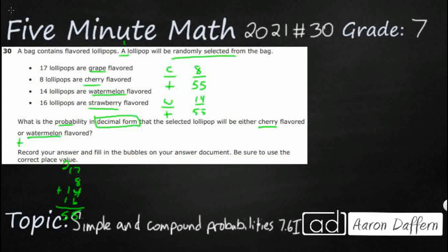Okay, so 14 out of 55. So if I wanted to add these two, that's what this means. We've got our 8 out of 55 plus our 14 out of 55. So let's add those two.